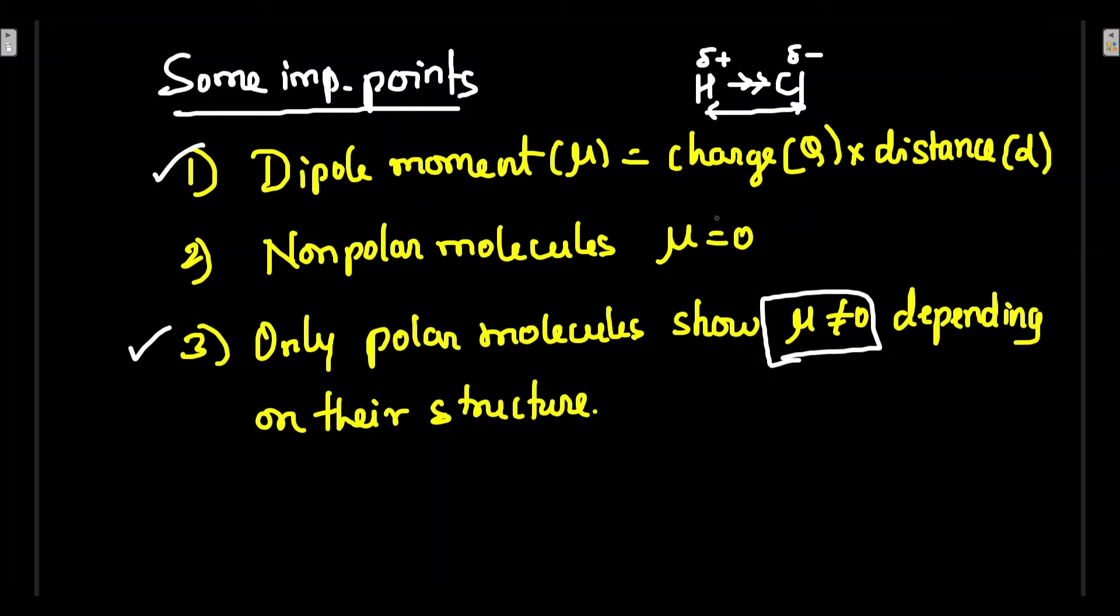Remember, if there is a non-polar molecule, μ is equal to zero. For example, hydrogen, oxygen, nitrogen—these all are non-polar molecules. If you take CO2, CH4, even though carbon and hydrogen are two different elements, their electronegativity are very similar.